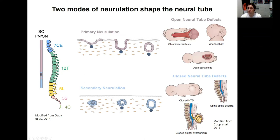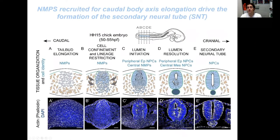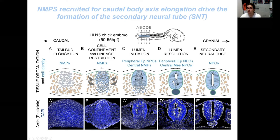Today we are going to focus on secondary neurulation, which is a process much less studied than primary neurulation. In the chicken embryo, we can follow the whole sequence of events of secondary neurulation from the caudal tip of the embryo until the last pair of somites. There, we find the cells that contribute to embryo elongation: the neuromesodermal progenitors. As secondary neurulation starts, these cells are confined inside the basement membrane and they undergo a lineage restriction, losing their mesenchymal identity and acquiring neural identity.